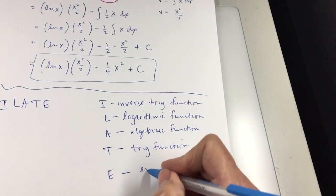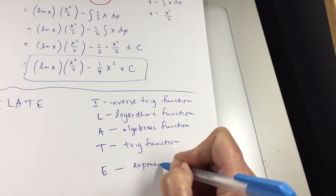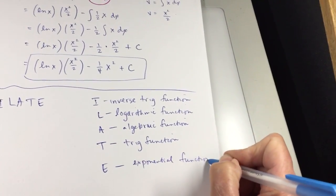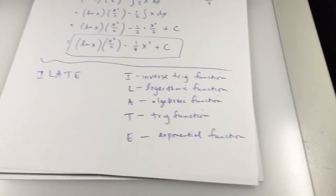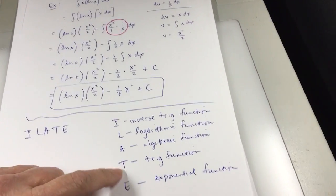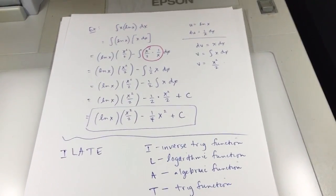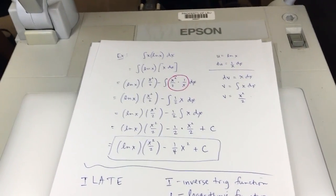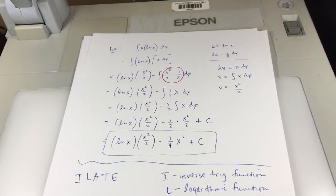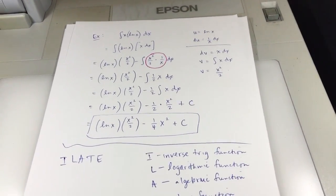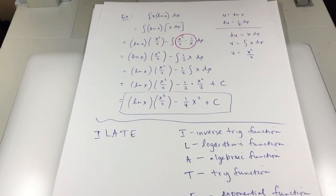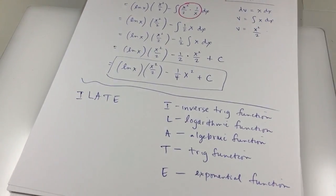E is exponential. Now, in working with these problems, I have found that really these last two could be in either order. But I-L-A-T-E, it's a nice way to help you out to pick out what U and DV are going to be, because that's somewhat the hardest thing to do.